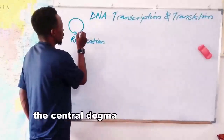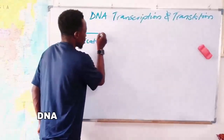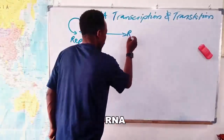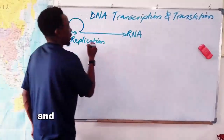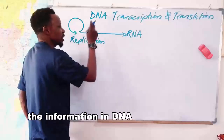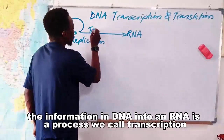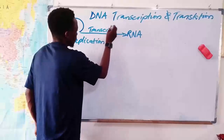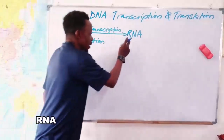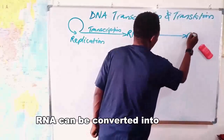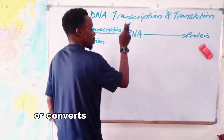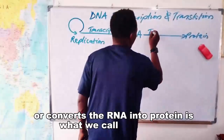The central dogma goes on to state that DNA is converted into a molecule called RNA. This process of copying the information in DNA into an RNA is the process we call transcription. Furthermore, according to the central dogma, RNA can be converted into protein. This process that translates or converts the RNA into protein is what we call translation.